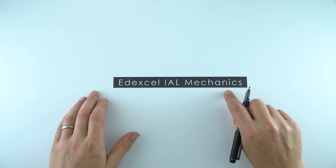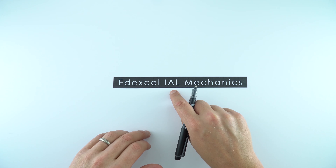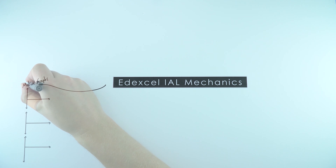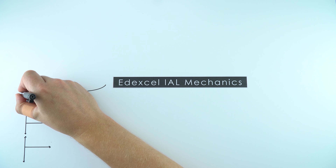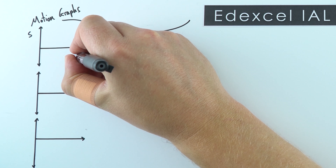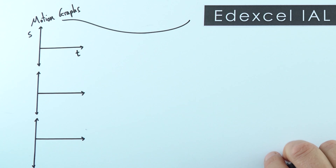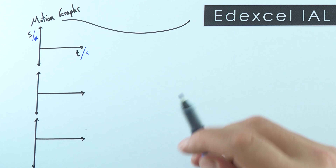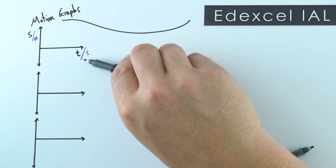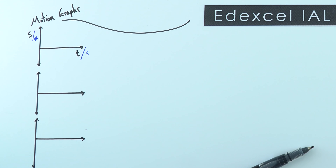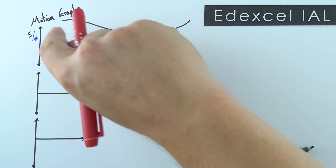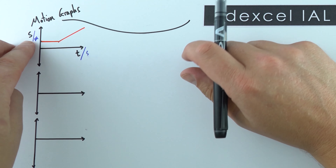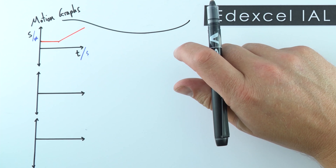This is a summary of the mechanics part of the Edexcel International A Level. The first thing to look at are motion graphs. For this first graph, we have displacement — using the letter S — and time along the bottom. We often measure displacement in meters and time in seconds, but sometimes hours or kilometres appear on graphs. We can look at the motion of objects and how their displacement changes with time. Because displacement is a vector quantity, we can have both negative and positive values.